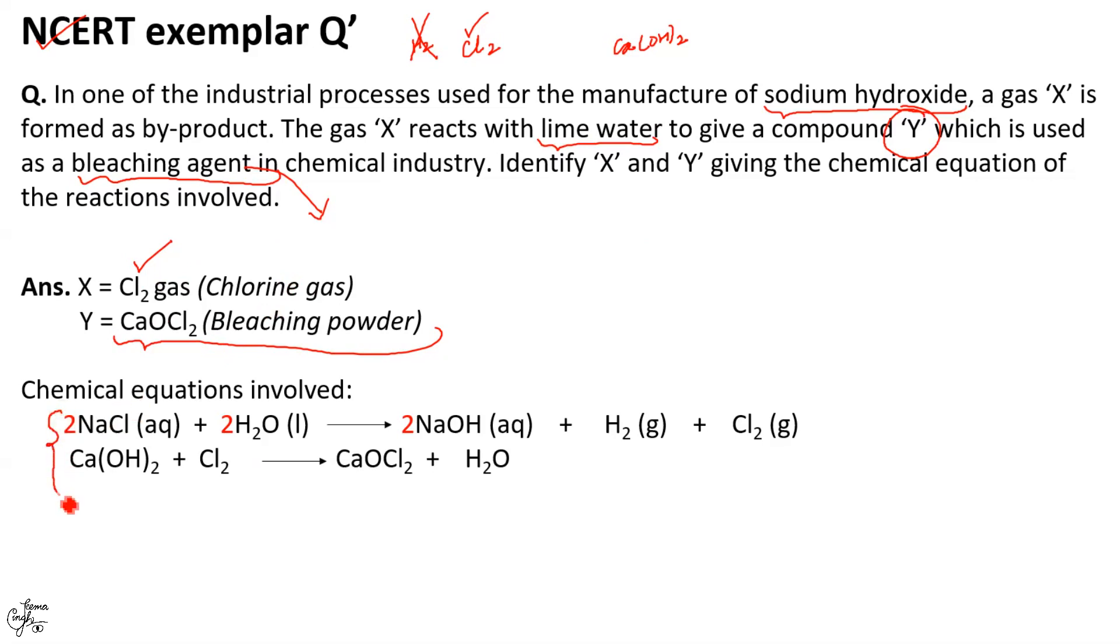So, these are the two chemical equations that are going to be involved. First one is your chlor-alkali process and second is your preparation of bleaching powder.